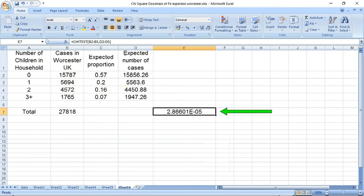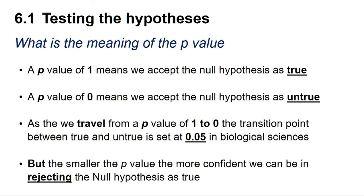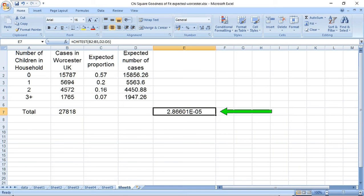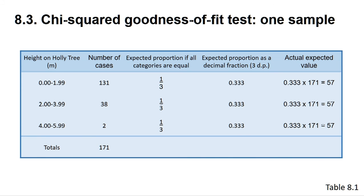As you can see, it has given us a probability value of 2.866 times 10 to the minus 5. A p-value of 1 means we can accept the null hypothesis as true, whereas a p-value of 0 means we can accept the null hypothesis as untrue. The transition point between true and untrue is set at 0.05 in the biological sciences. The smaller the p-value below 0.05, the more confident we can be in rejecting the null hypothesis. Thus, this small probability suggests we can reject the null hypothesis and that there is a significant difference between the number of dependent children in households in Worcester compared to the expected number derived from data for the whole of England and Wales.